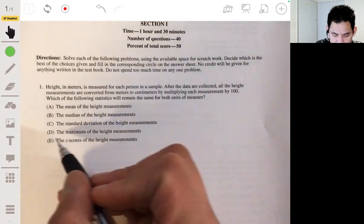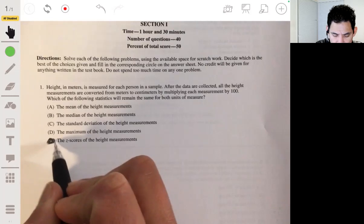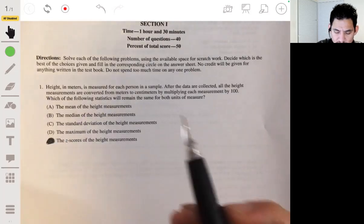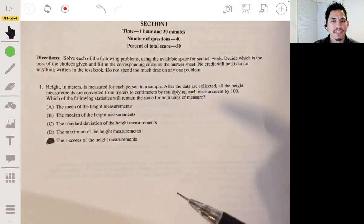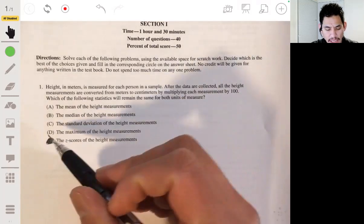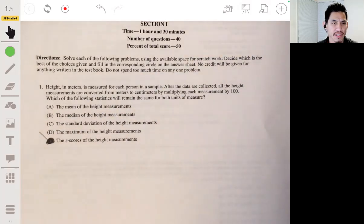The z-scores of the height measurements. Okay, so this will not change because this is a standardized score and it doesn't matter if you measure in feet, centimeters, inches. That's the whole point of the z-score because it gives you a relative idea of where you lie in the population.